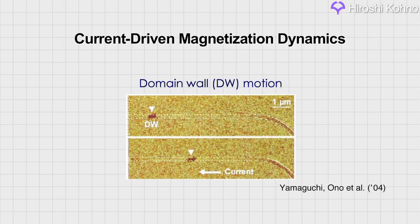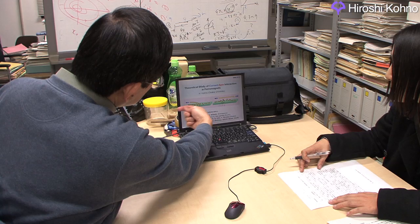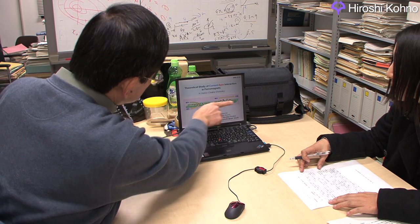The impetus for this research came from an experiment on current-driven domain wall motion. In that experiment, a magnetic domain wall was moved by a current passing through a wire made of very magnetic material. Professor Kono attempted to explain this experiment theoretically.